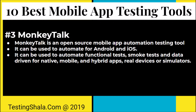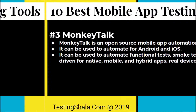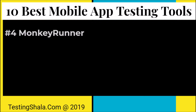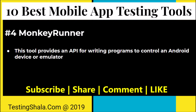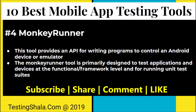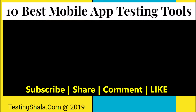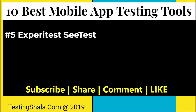That is the third important mobile app testing tool, MonkeyTalk. The fourth mobile app testing tool is MonkeyRunner. MonkeyRunner provides an API for writing programs to control an Android device or emulator. It exposes APIs to write programs to control your Android device or emulators, and is majorly used for unit testing.